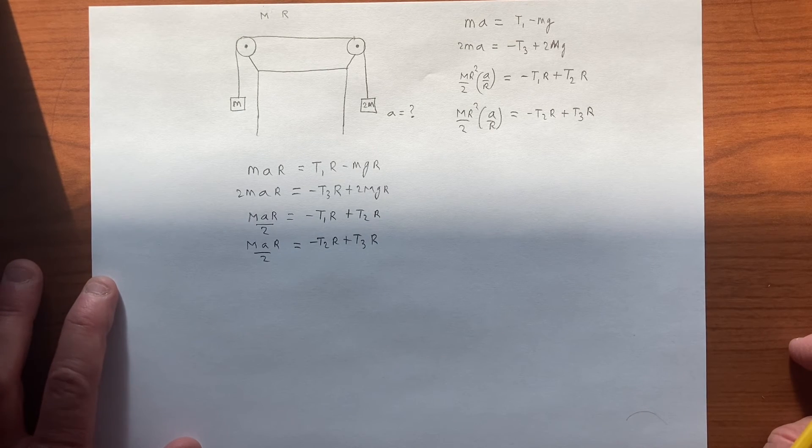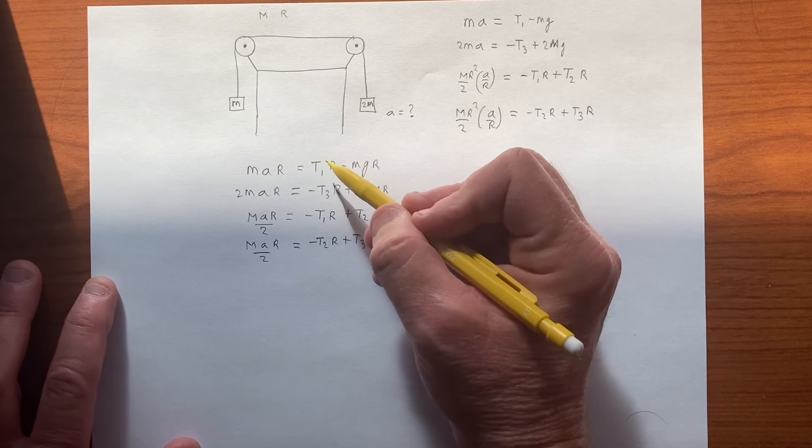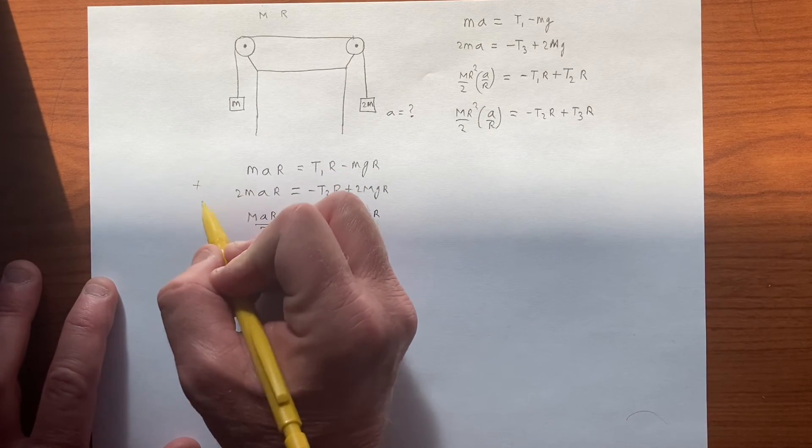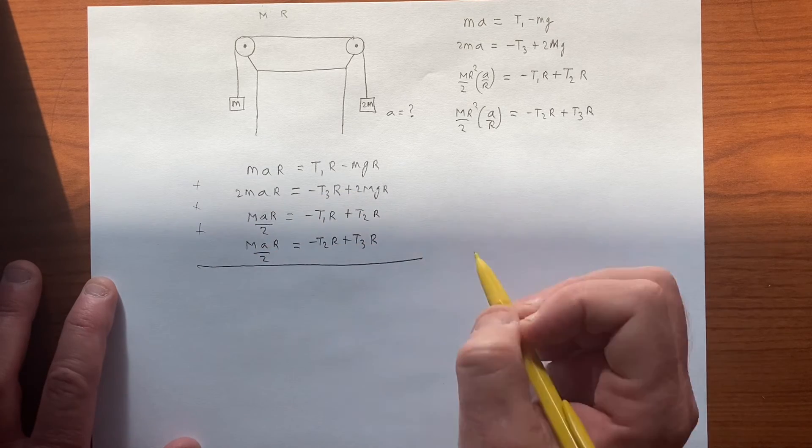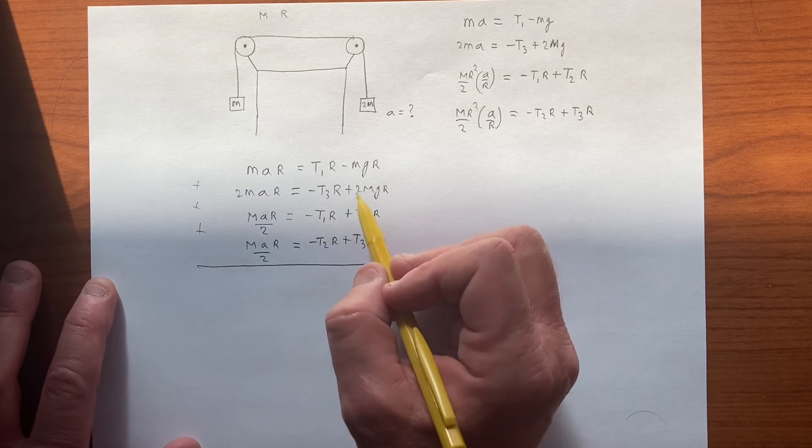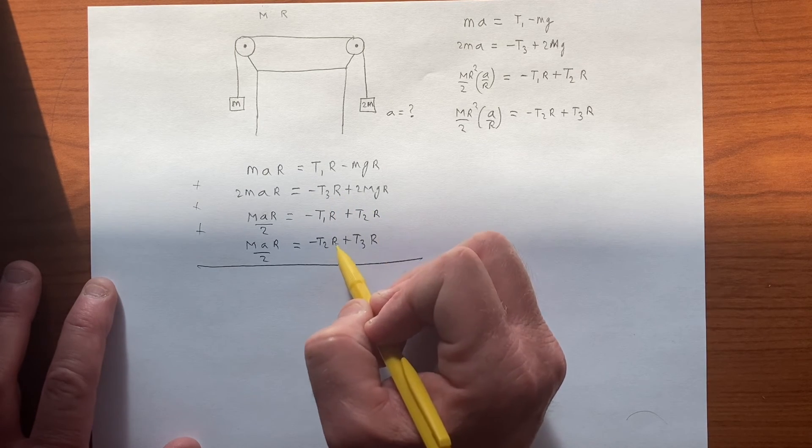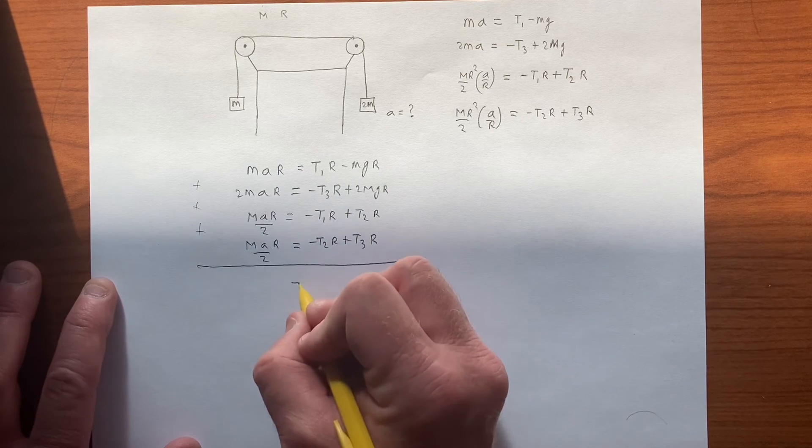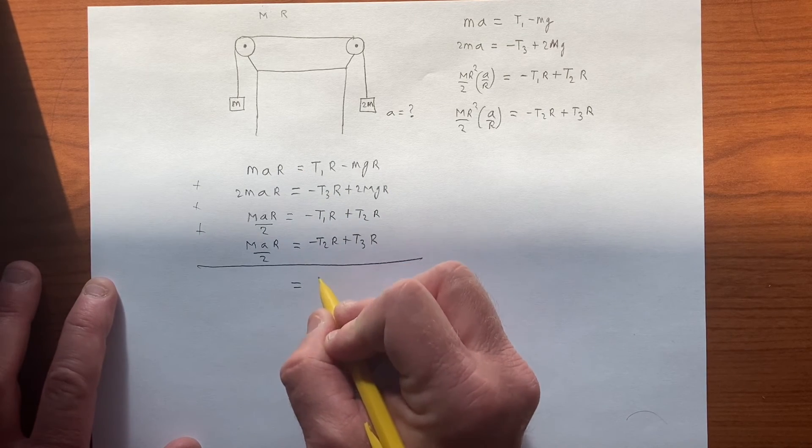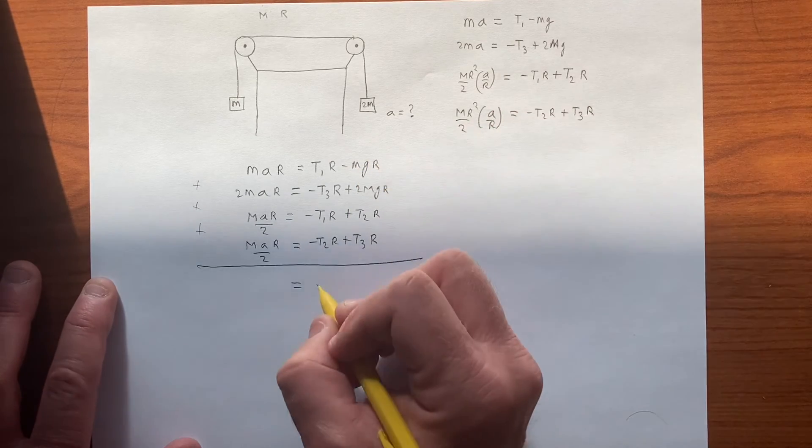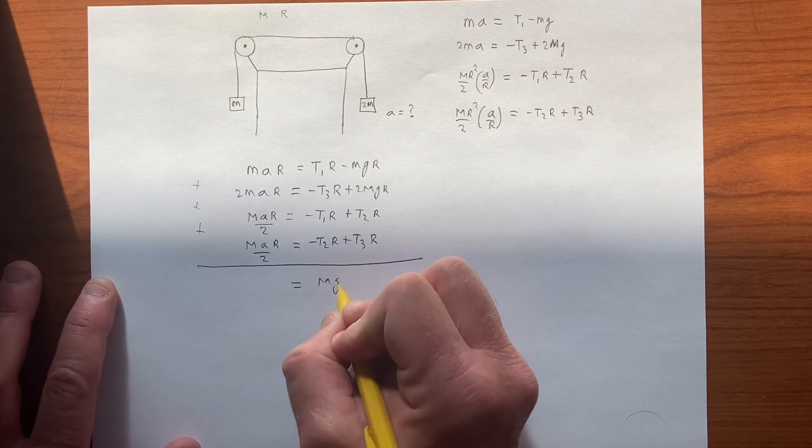let's add all these equations together. We have a t1r here, and we have a minus t1r, so let's add this to this to this, t1r minus t1r cancels, the t2r is here, and there's minus t2r, and there's minus t3r, t3r, so all of those cancel, so the right-hand side has a 2mgr minus mgr, so we just have an mgr,